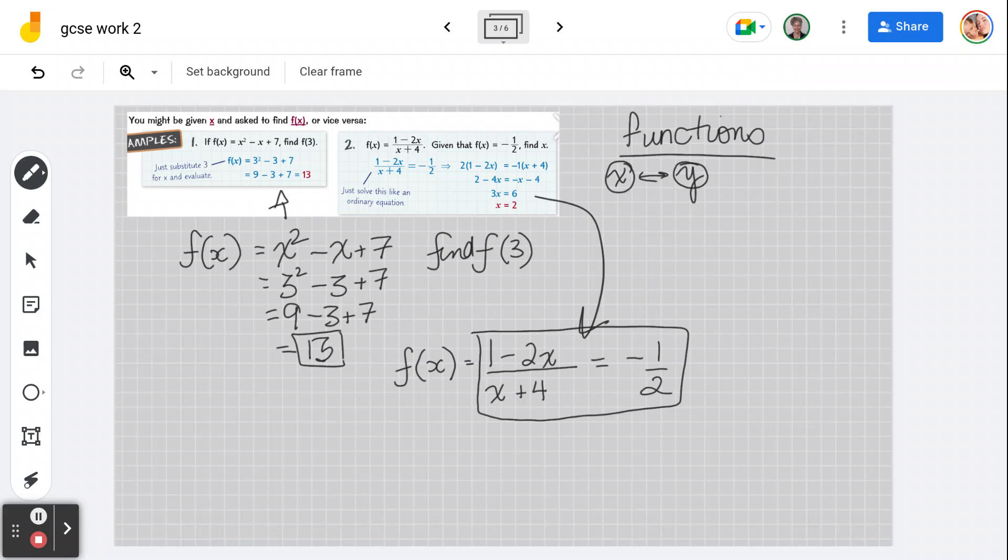Now what we're going to do is we're going to say, find what is x. So to do that, I'm going to multiply this 2 here by 2, and that gets rid of that. But whatever I do on this side, I have to do on this side, so I'm going to multiply this by 2. And then what I'm going to do is I'm going to multiply this here by x plus 4 on this side, which gets rid of it on this side. But then I'm going to multiply it here by x plus 4.